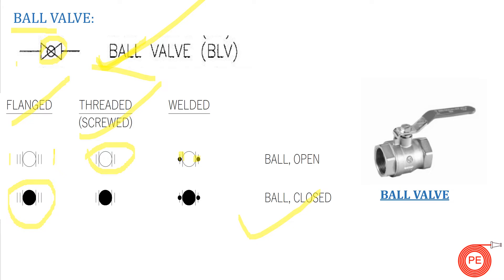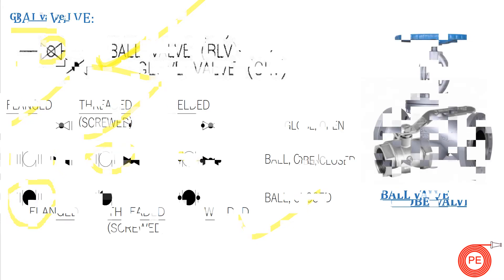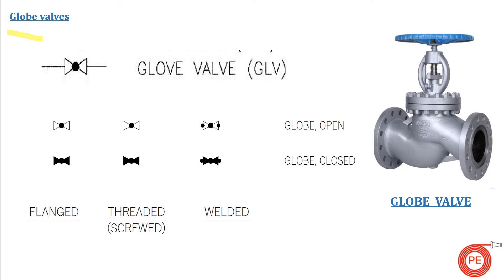Moving to the globe valve: if there is a blackish filled dot inside the valve symbol, it is a globe valve. The basic difference between a globe valve and a ball valve is that a globe valve has a filled black dot inside, while a ball valve has an open circle. Again, blackish fill means the valve is closed, and hollow means open. Two lines beside indicate flanged, nothing indicates threaded, and two dots indicate welded connection.